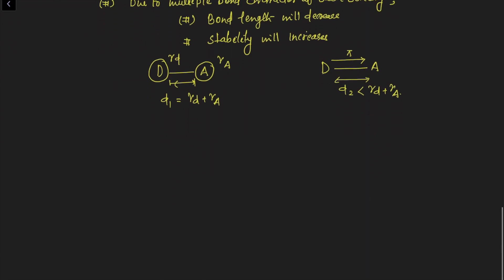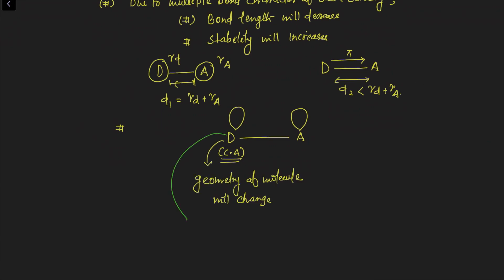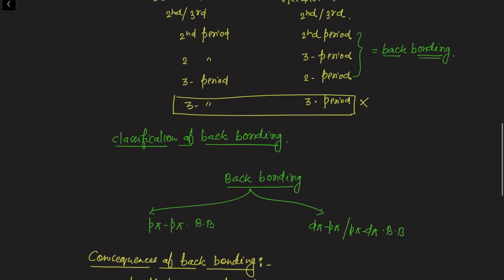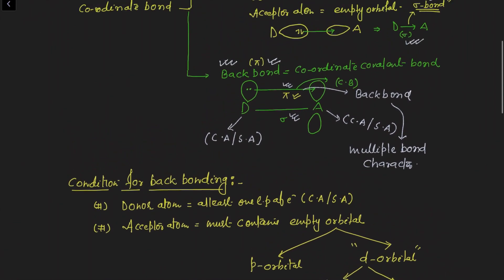The last consequence is very important and has many good examples. If the donor atom is the central atom, then back bonding will change the geometry of the molecule. But if the donor atom is the surrounding atom, then the geometry of the molecule will not change. The answer to why and how this happens will be discussed in the next video with examples covering each and every point of this discussion.